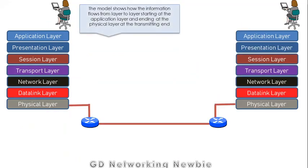This model shows how information flows from layer to layer, starting from the application layer and ending at the physical layer at the transmitting end. The user generates some data; that data is handed over to the application layer, which hands it to the presentation layer, then session, transport, network, data link, and finally the physical layer. This is how data is passed layer to layer.